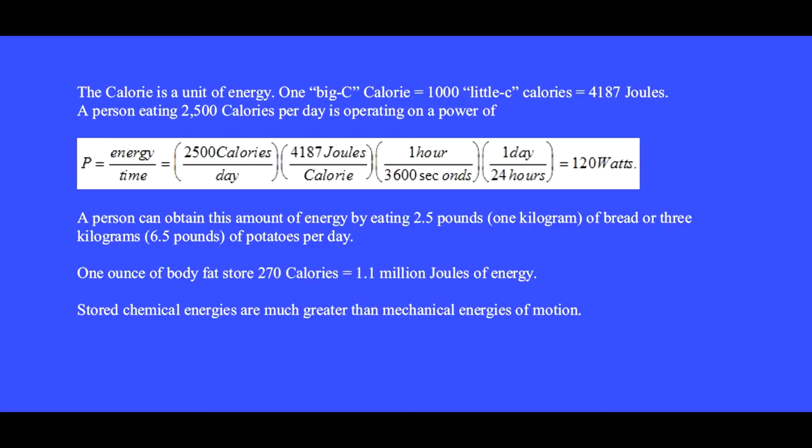The calorie is a unit of energy. One big C calorie equals 1,000 little c calories equals 4,187 joules. A person eating 2500 calories per day is operating on a power of 2500 calories per day times 4,187 joules per calorie times 1 hour per 3600 seconds times 1 day per 24 hours, equals 120 watts.